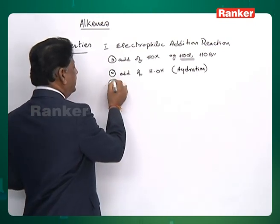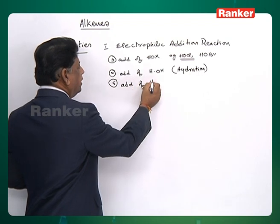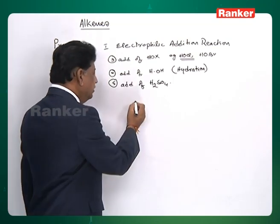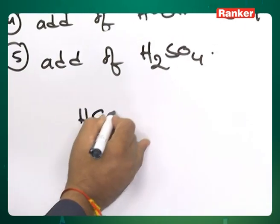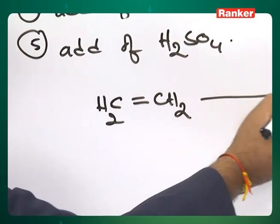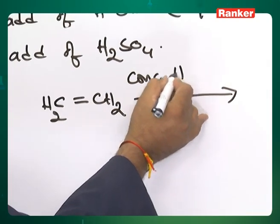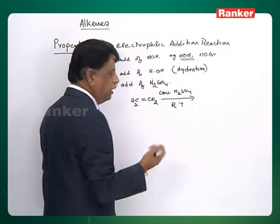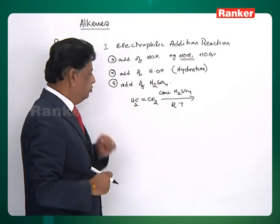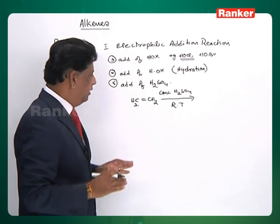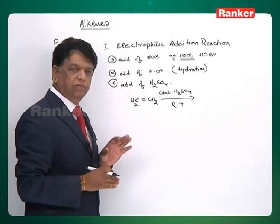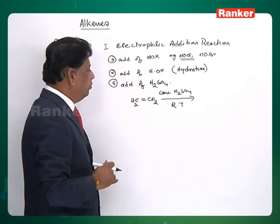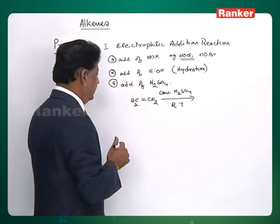The fifth reaction is addition of H₂SO₄ itself, but it must be concentrated sulfuric acid. Two conditions apply: first, concentrated sulfuric acid; second, the reaction must be carried out at room temperature only (around 25°C). At higher temperatures, after the product is formed, it undergoes removal of sulfuric acid — desulfonation takes place.